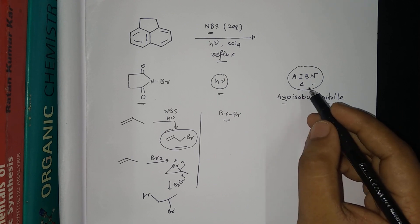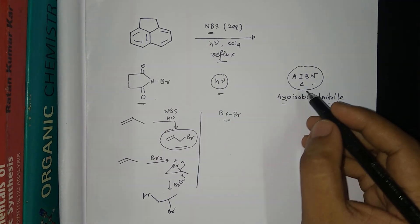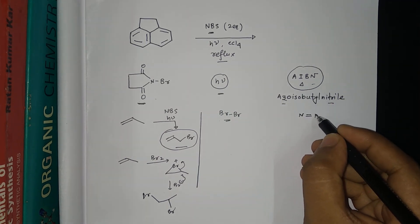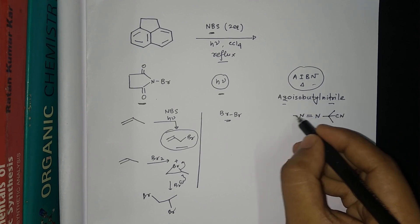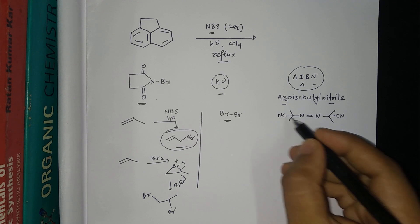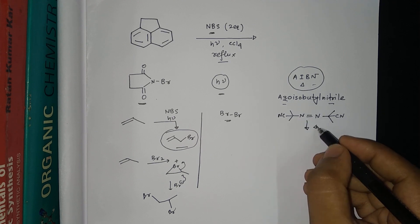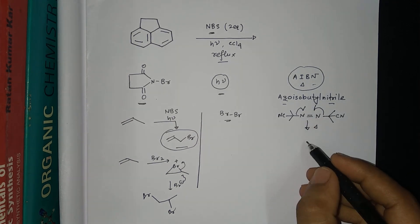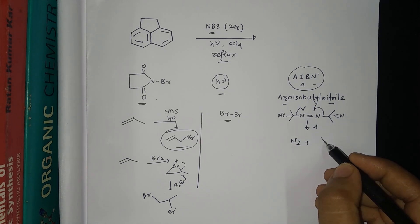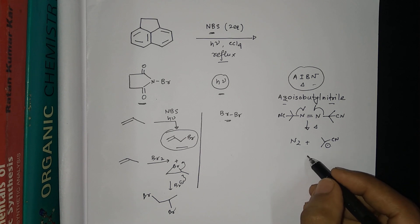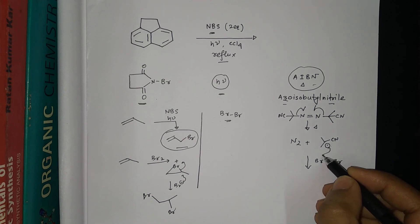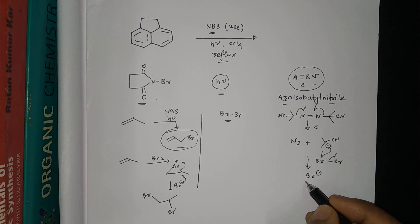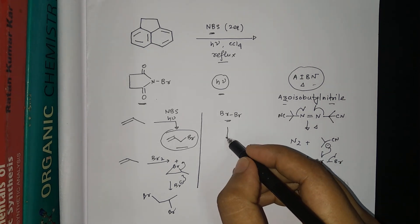When AIBN or hν is used, the AIBN structure — which is N=N with two (CH₃)₂CN groups — undergoes thermal cleavage, releasing N₂ and generating a carbon radical. This radical reacts with the small amount of Br2 present in the NBS to form Br•. The hν condition similarly generates Br•.